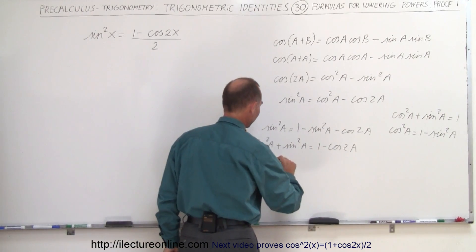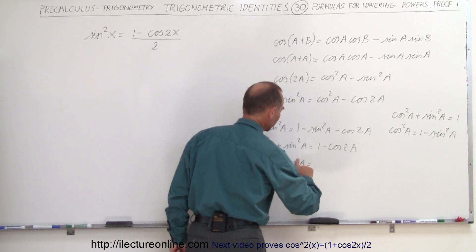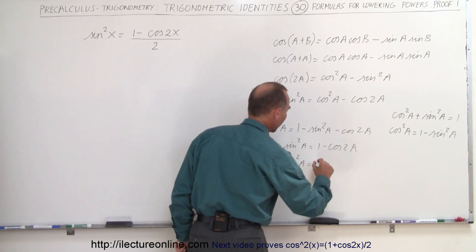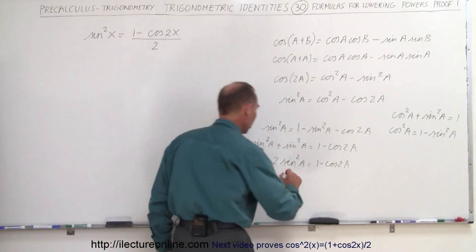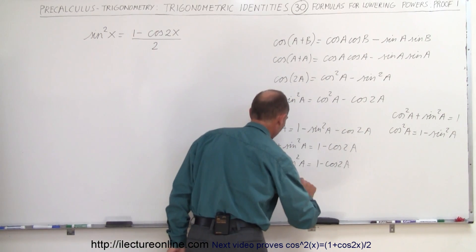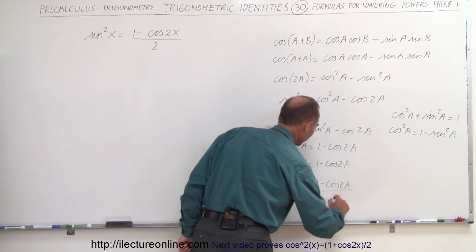We're going to add these together. So now we have 2 times the sine squared of A is equal to 1 minus the cosine of 2A. And then if we divide both sides by 2, we get the sine squared of A is equal to 1 minus the cosine of 2A, all divided by 2.